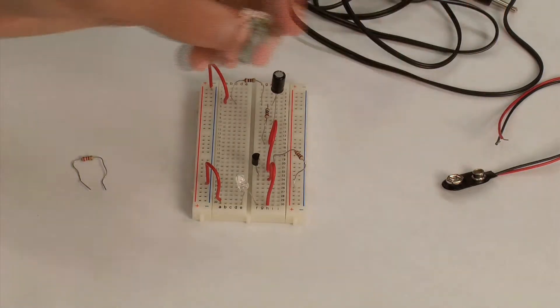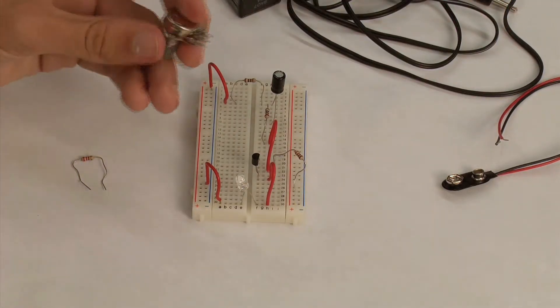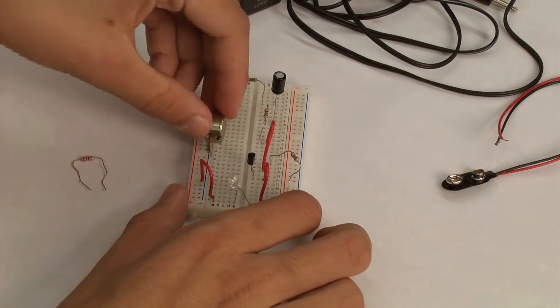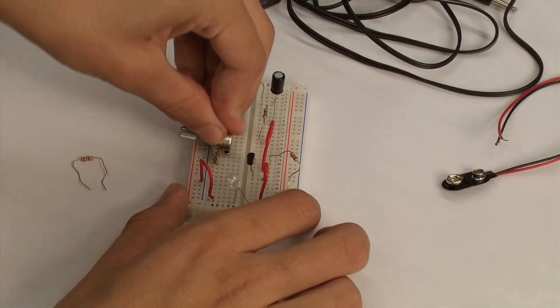A potentiometer is essentially a variable resistor. By rotating the dial on its side, we can increase or decrease the amount of electrical resistance it provides to the circuit.